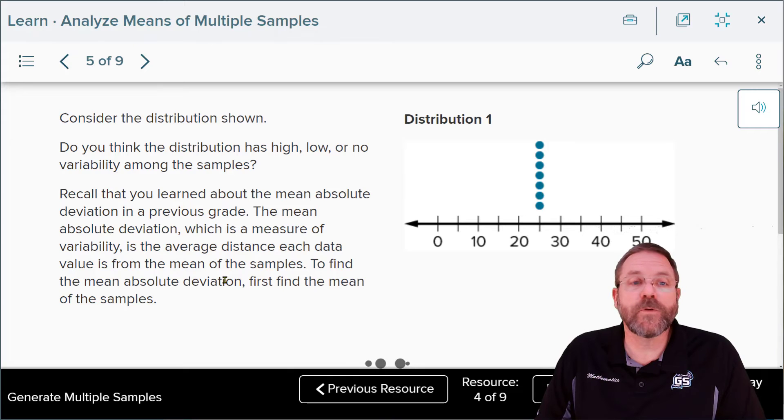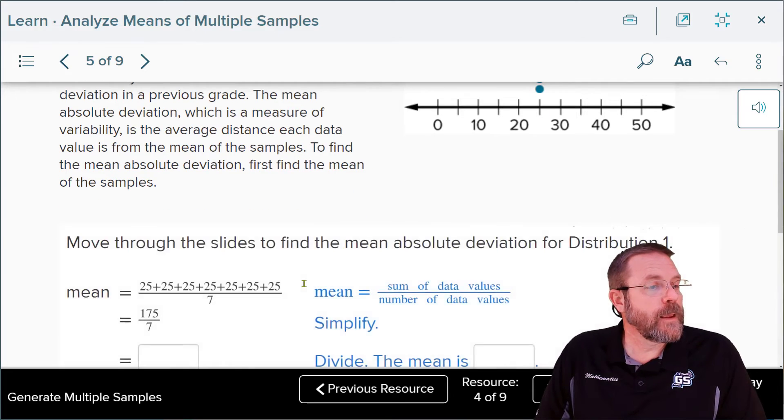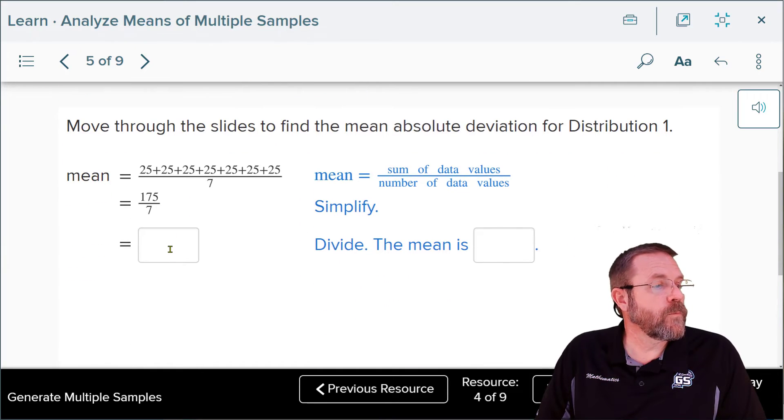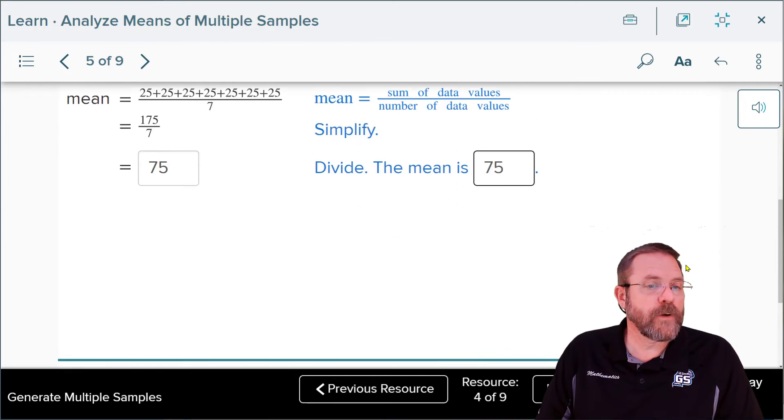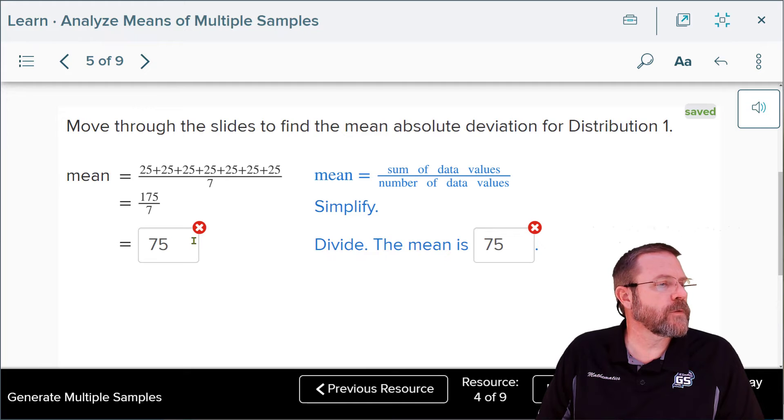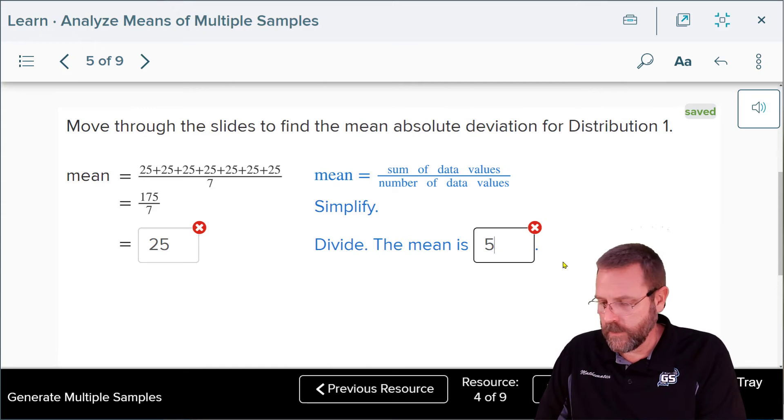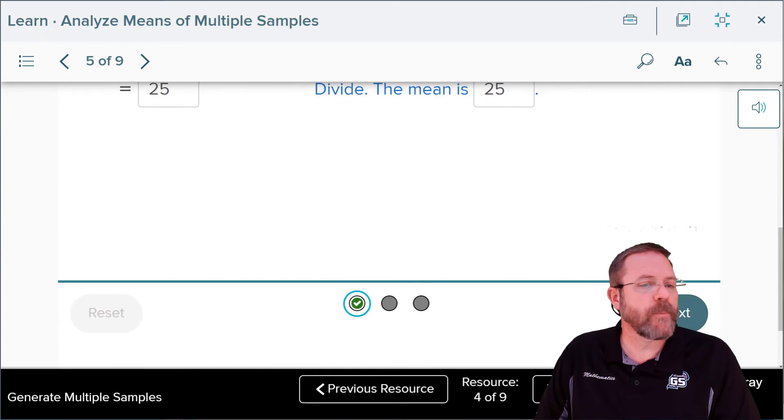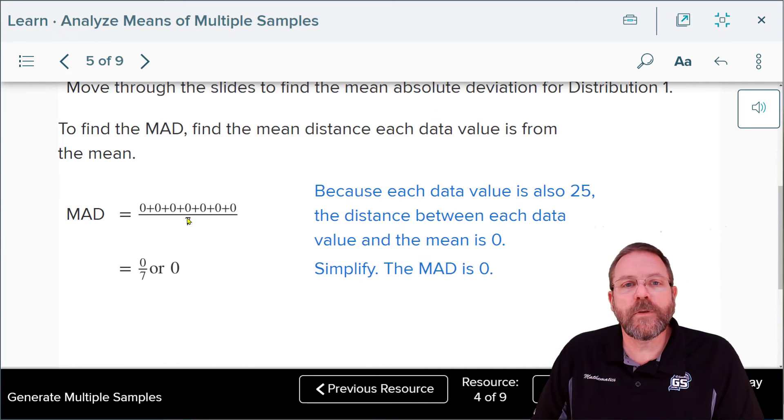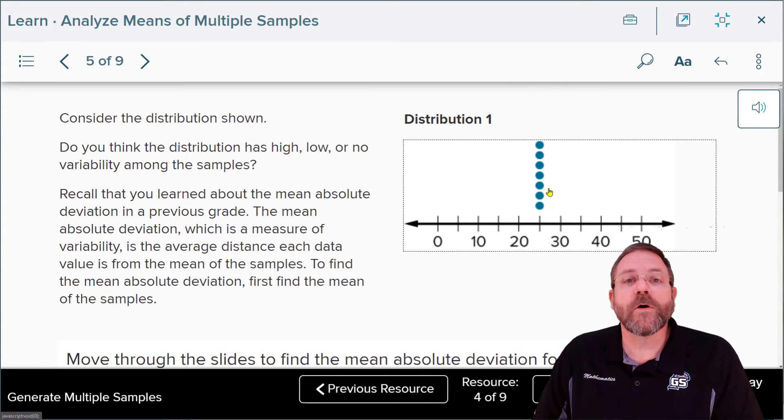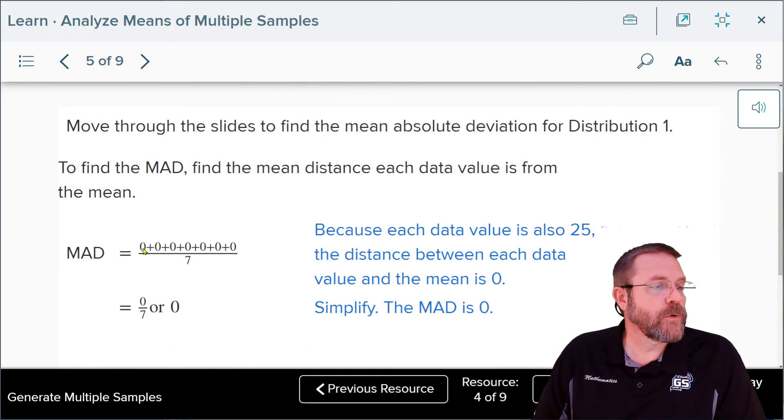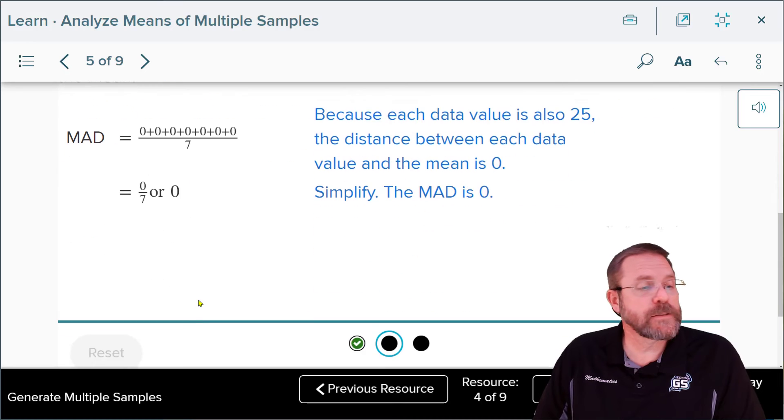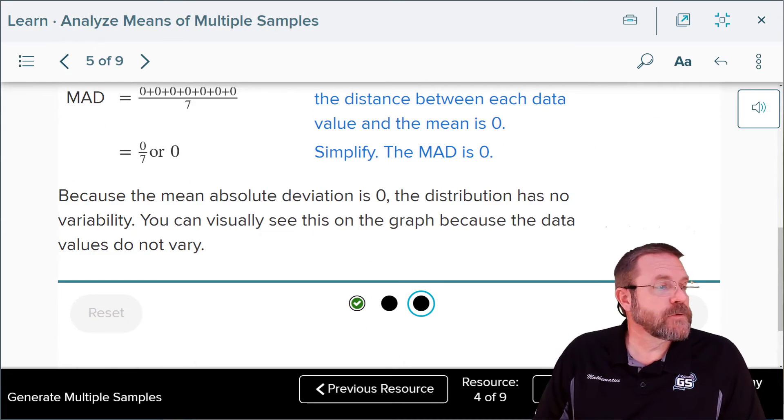The mean absolute deviation, which is the measure of variability, is the average distance each data value is from the mean of the samples. To find the mean absolute deviation, remember you first had to find the mean of the samples. You add all those up, divide by the number of samples, and what's that mean going to be? Well, that mean is going to end up being 75—wait, not 75, 25. I wasn't looking close enough. Now we have happy little numbers there. And from here, the mean absolute deviation is going to be zero because every single one of these data points are zero spaces away from that 25. So when you add up all those zero spaces, divide it by seven, you get zero. So your mean absolute deviation is zero. That means the distribution has no variability at all. You can visually see this on the graph because the data values do not vary.